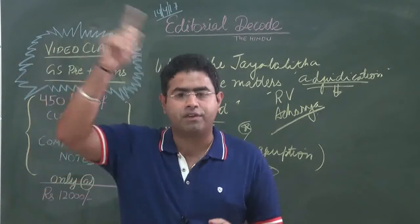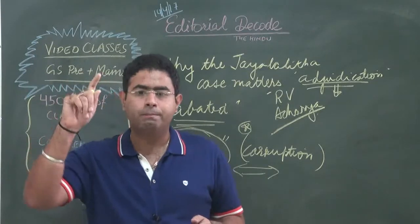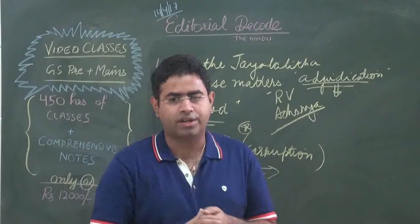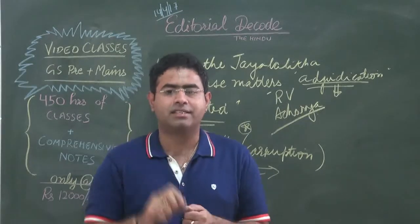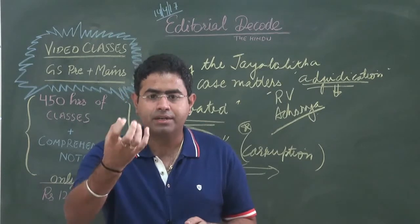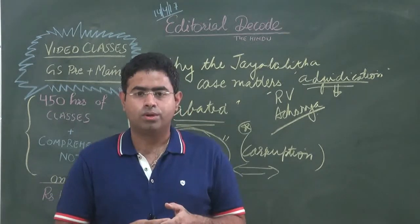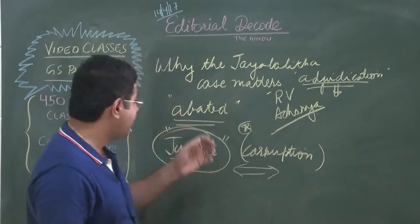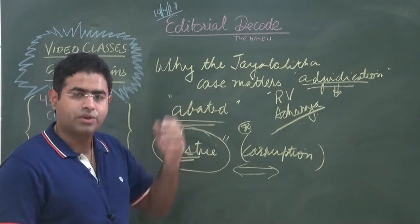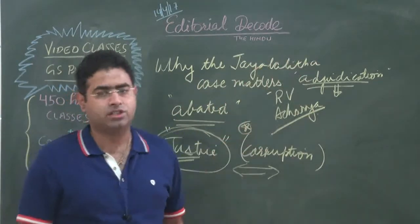Had the verdict come before the demise of Jayalalitha, she would have been declared a convict in the particular case, and the assets that she had amassed would have been taken back by the state. But that is not the case now. The case against her has been abated. By abating such a case, we're trying to create ameliorating conditions for people indulging in corruption.